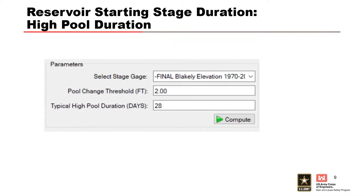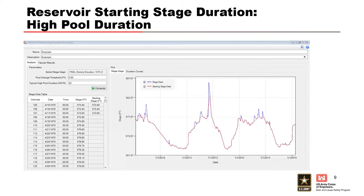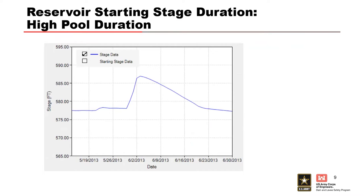The last input is the typical high pool duration. To determine a reasonable input, ask yourself: what's the duration of a typical flood in my watershed? You have to look at your stage data for multiple individual flood events and estimate how many days the pool remains elevated. The hydrograph shown here is the June 2013 event, which had a high-stage duration of approximately 28 days. Always look at several events to come up with a good overall estimate, since every flood will have slightly different variations. This parameter then screens out the following duration you set so that you're not incorporating that into your antecedent reservoir stage duration curves.